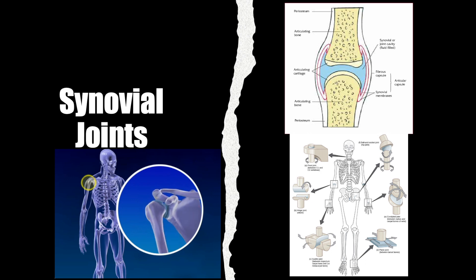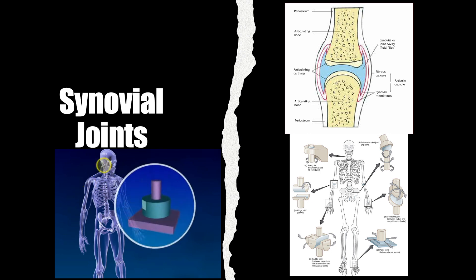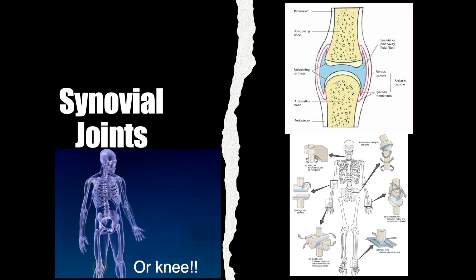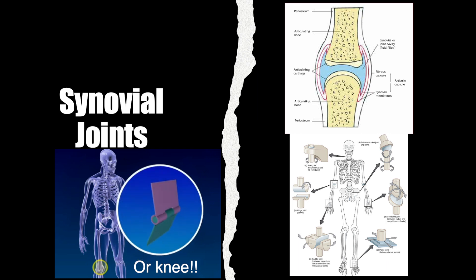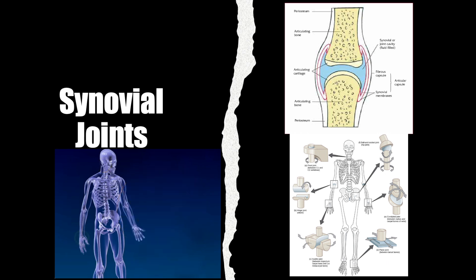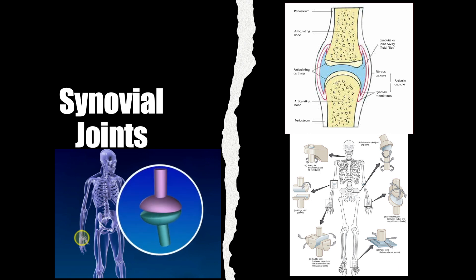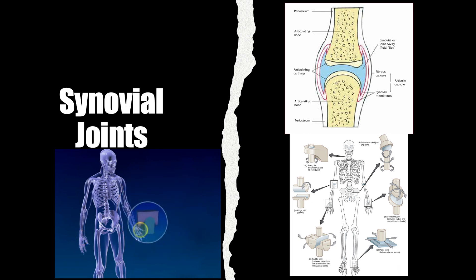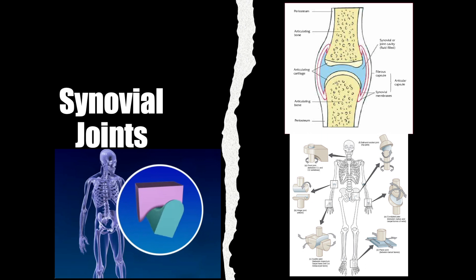Then we have pivotal joints, like the one at the base of our skull at C1, which lets us swivel our heads to look over our shoulder. The elbow is a perfect example of a hinge joint, designed primarily for bending and straightening motions. Our wrists have condyloid joints that allow for bending, straightening, side-to-side, and even circular movements. There are also plane joints between bones in our feet and saddle joints at the base of our thumbs that allow for gripping and rotating actions.